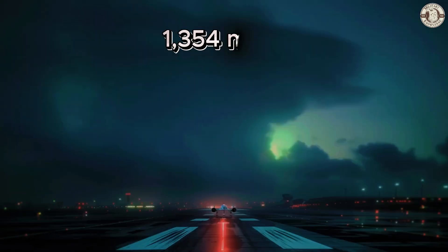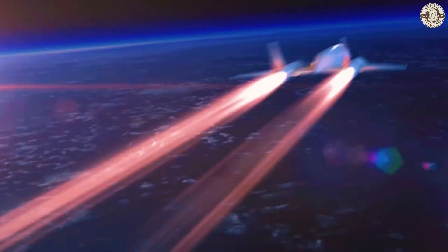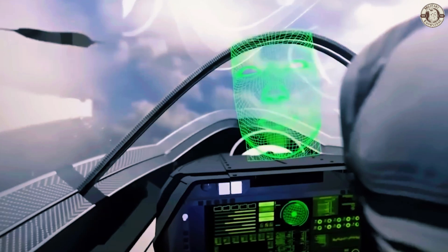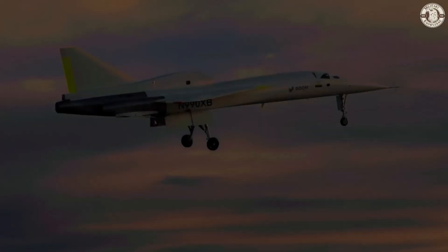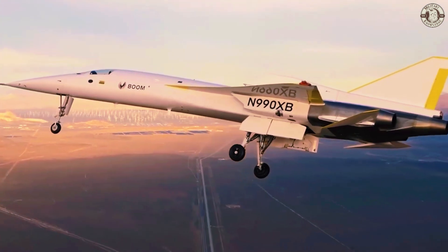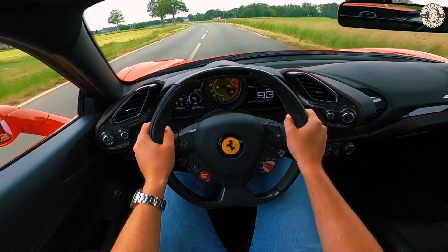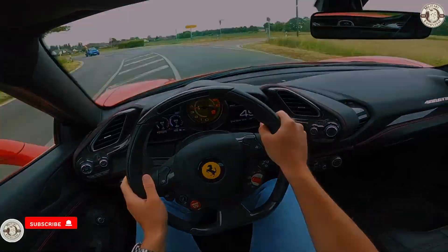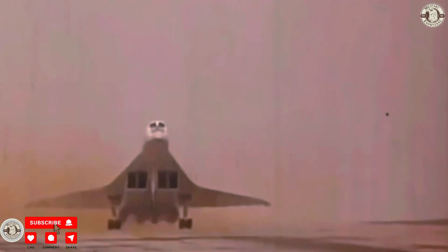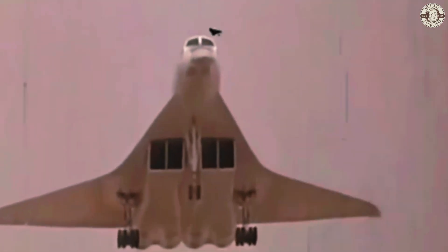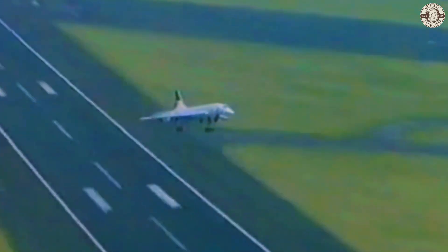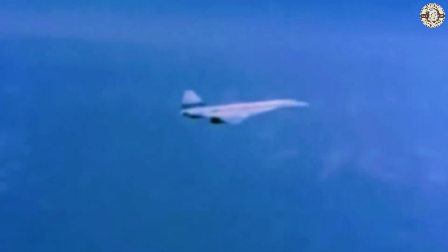Concorde could hit 1,354 miles per hour, which is twice the speed of today's commercial airliners, cutting your New York to London trip to just under three hours. But as awesome as it was, it never reached hypersonic speeds. It's like driving a Ferrari in a world where people are now building rocket ships. Concorde retired in 2003, and when it did, it left behind a massive void in high-speed aviation that nobody has been able to fill—until now.